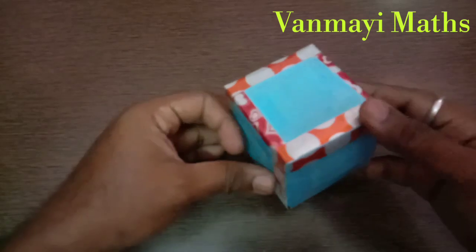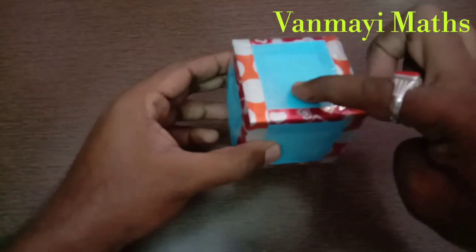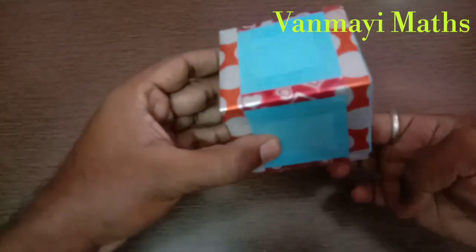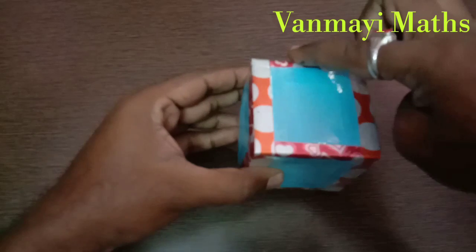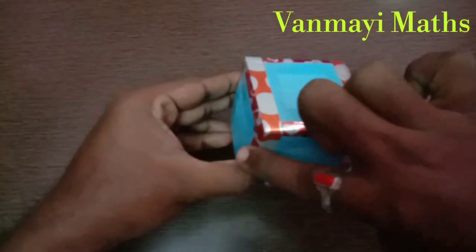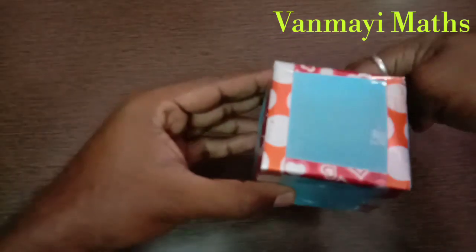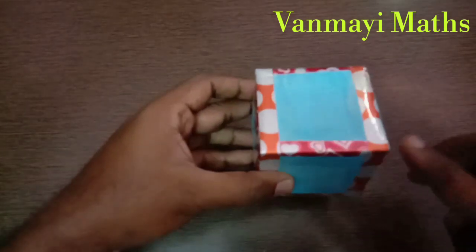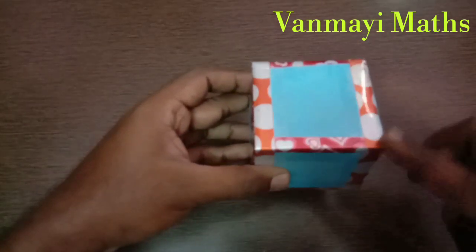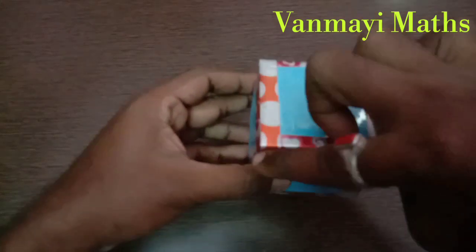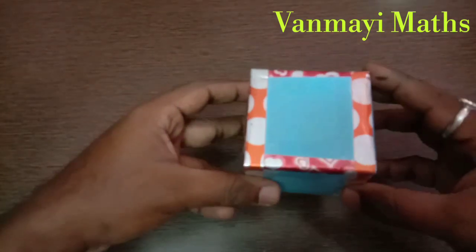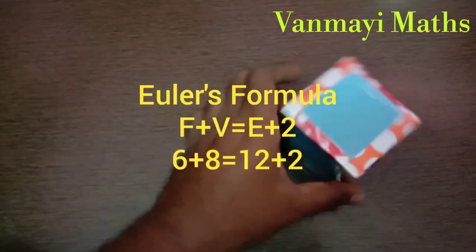A cube has six faces — one, two, three, four, five, six — and twelve edges — one through twelve. It also has eight vertices: four on the top side and four on the bottom side.